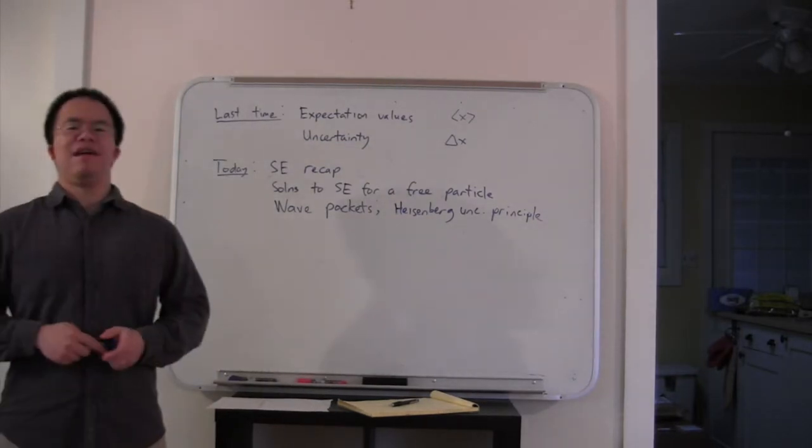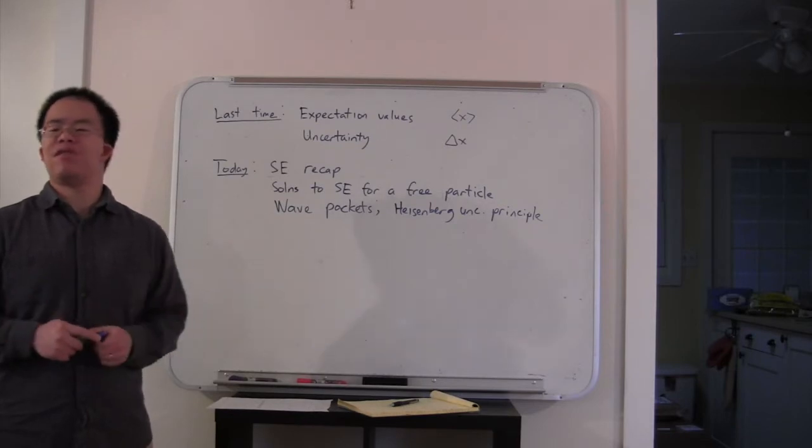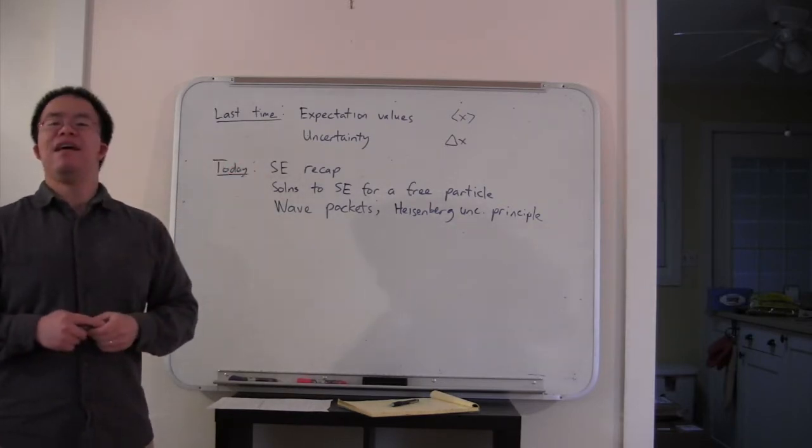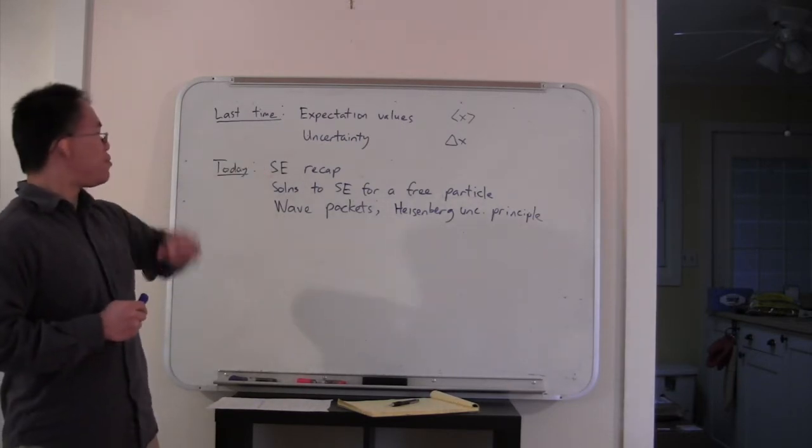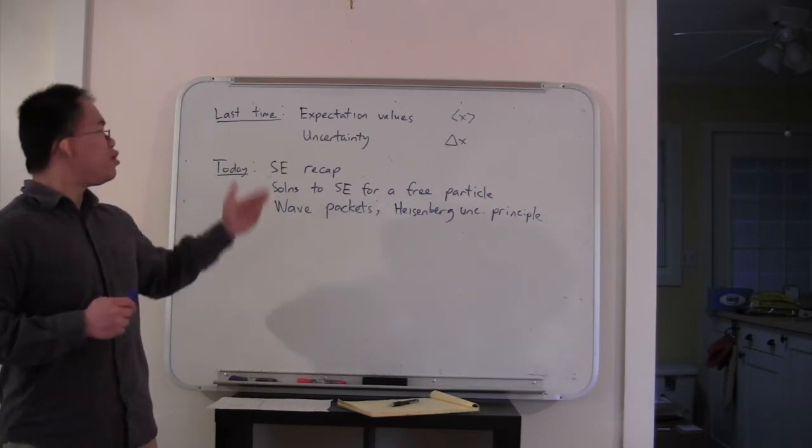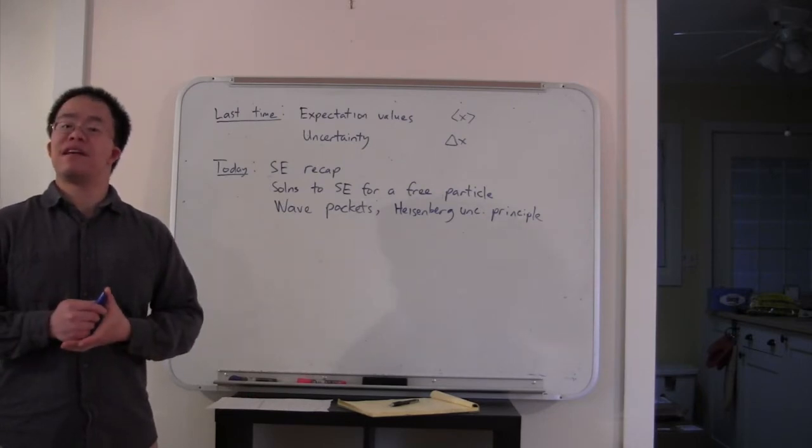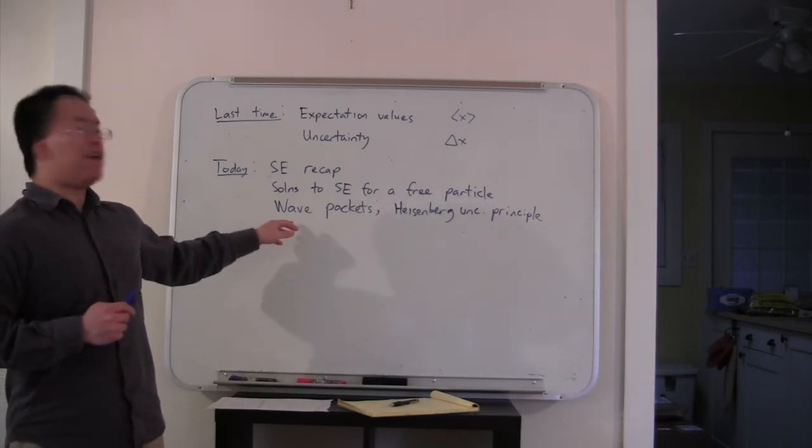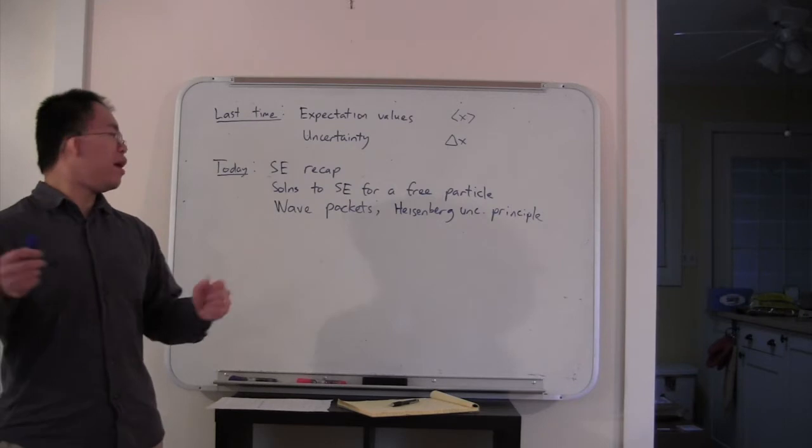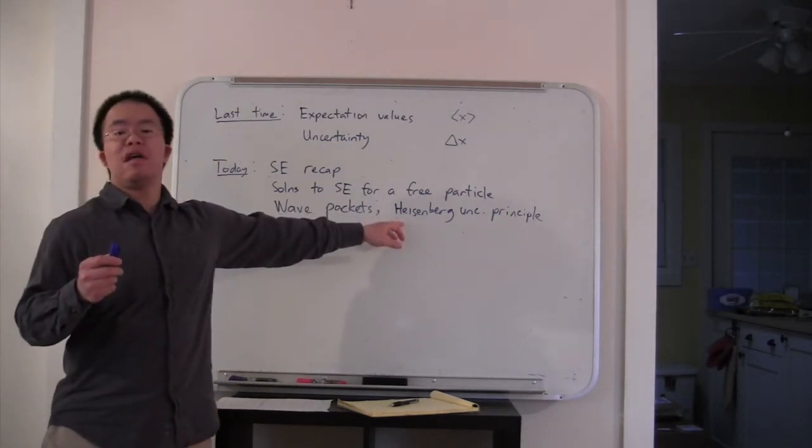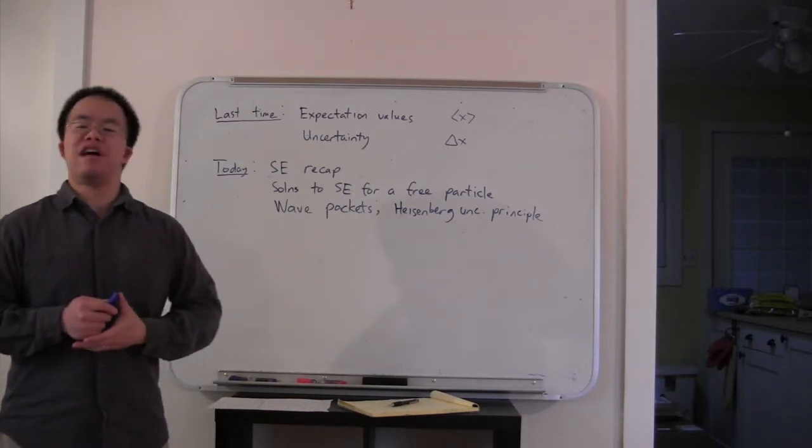We've been looking at rather artificial solutions to the Schrödinger equation so far. What we'll start doing today is looking at actual solutions. We'll talk about solutions for a free particle, then wave packets, and this will lead us into an introduction to the Heisenberg uncertainty principle.